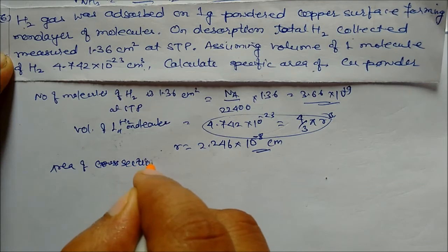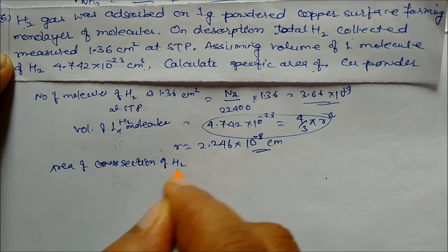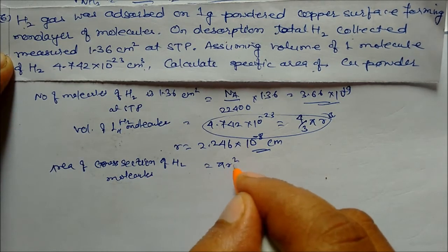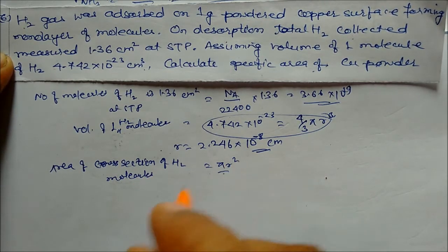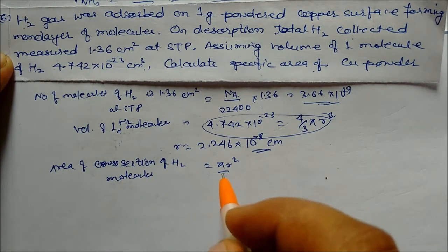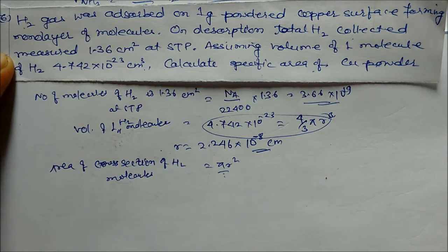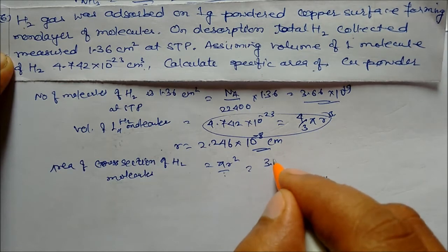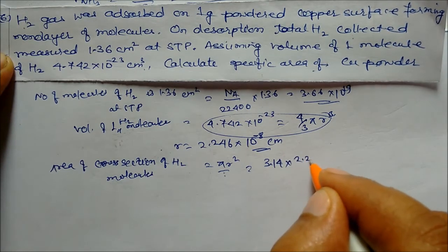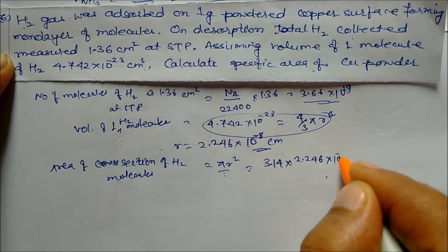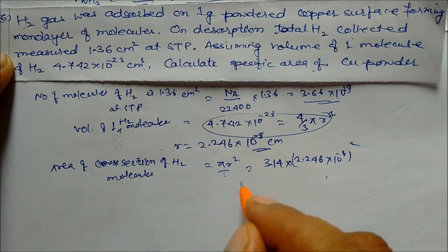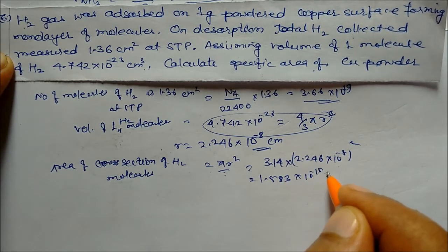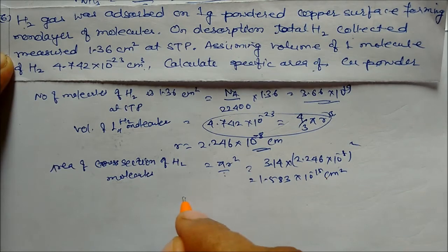Radius of hydrogen molecule: using volume equals (4/3)πr³ with volume 4.742 into 10⁻²³ cm³, solving gives r equals 2.246 into 10⁻⁸ cm. Cross-sectional area of hydrogen molecule equals πr² equals 3.14 into (2.246 into 10⁻⁸)² equals 1.583 into 10⁻¹⁵ cm squared.